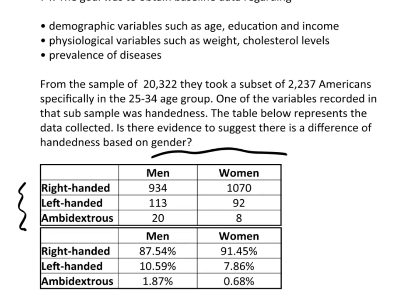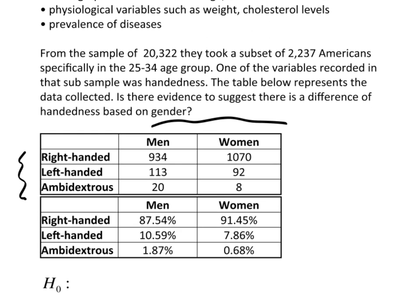That's the big difference between the test of independence and the goodness of fit test. Goodness of fit has one variable with multiple levels. The test of independence has two variables with multiple levels. If ambidextrous didn't exist, we could do two-sample proportions or an odds ratio. But with this third category, that's what messes up the idea of odds ratios and proportions — hence, the test of independence is pretty important.